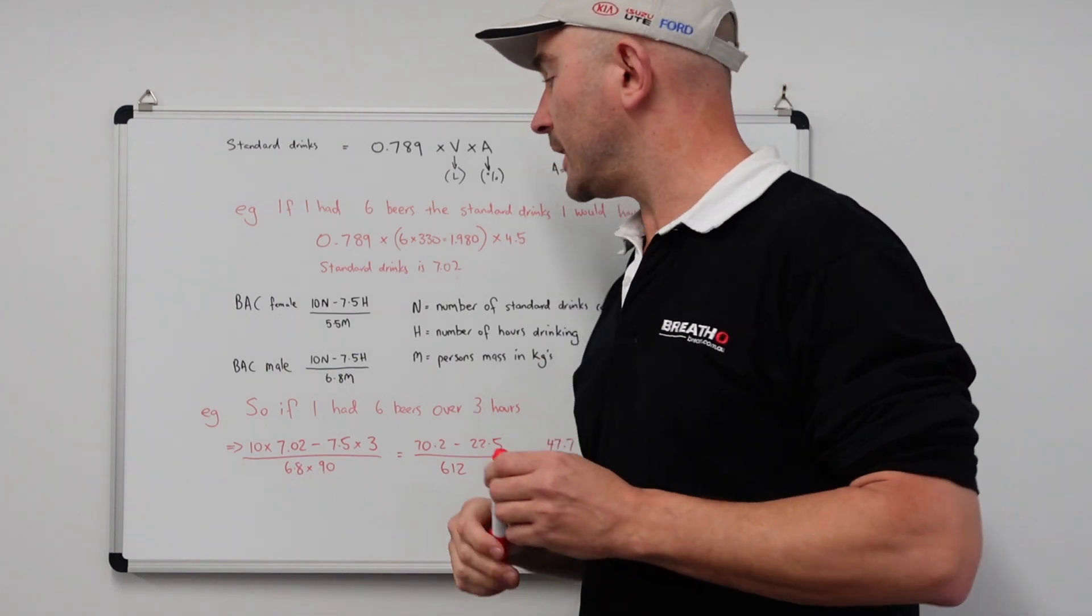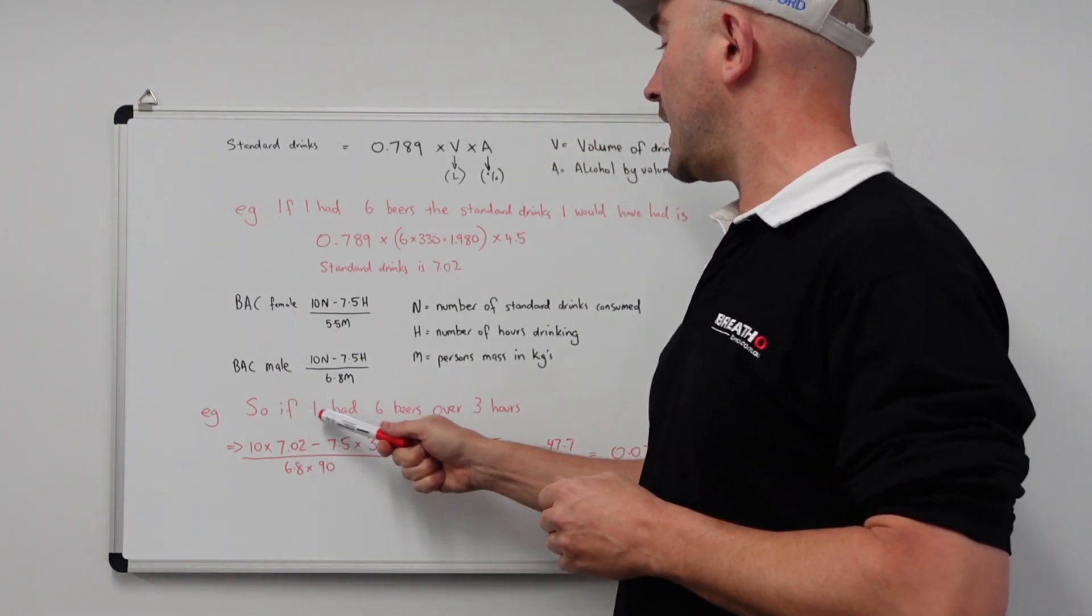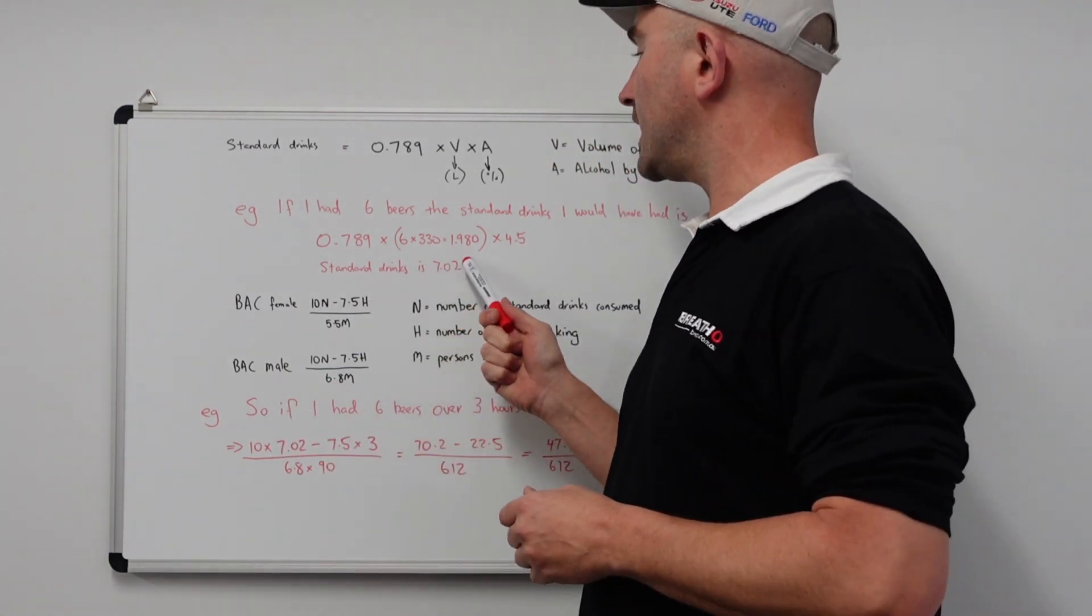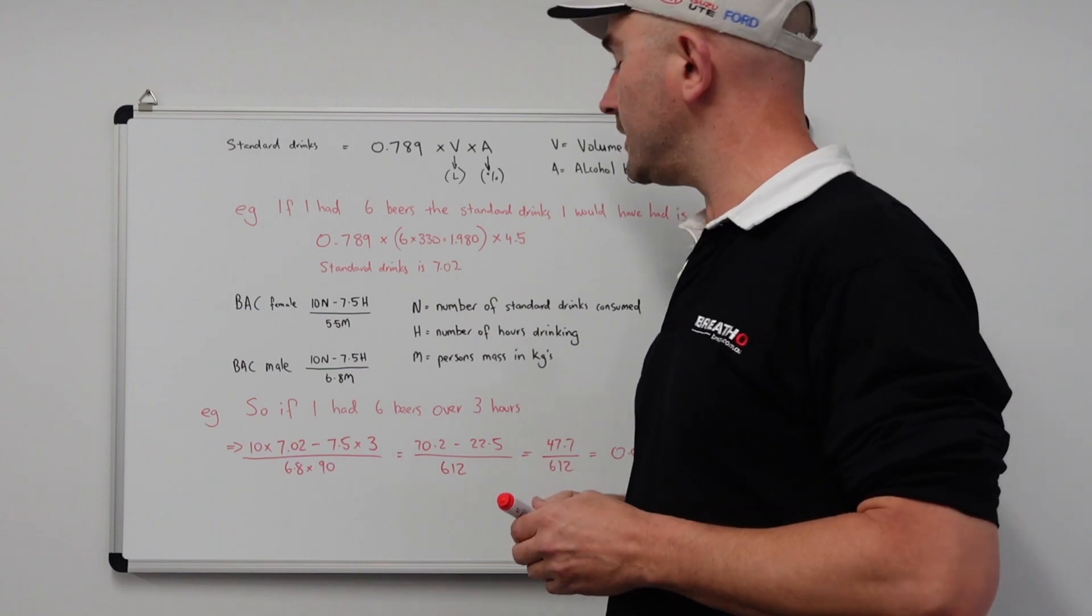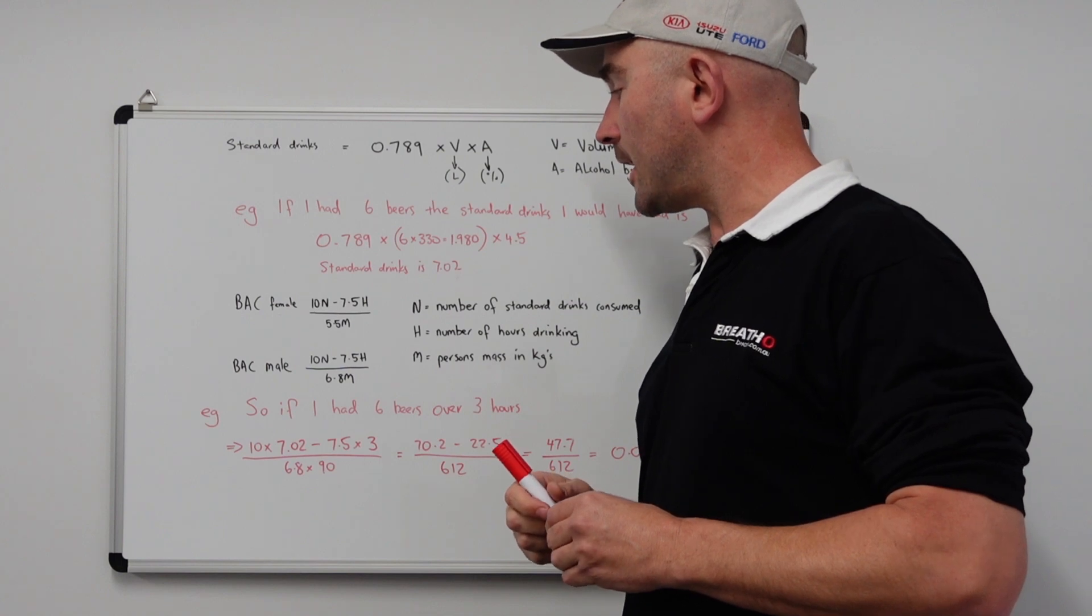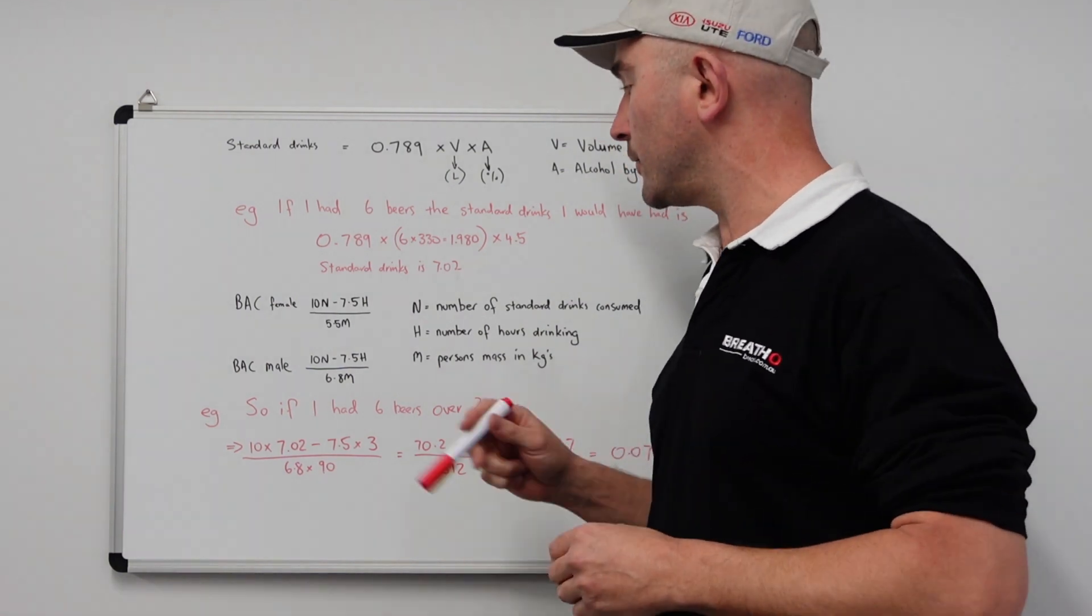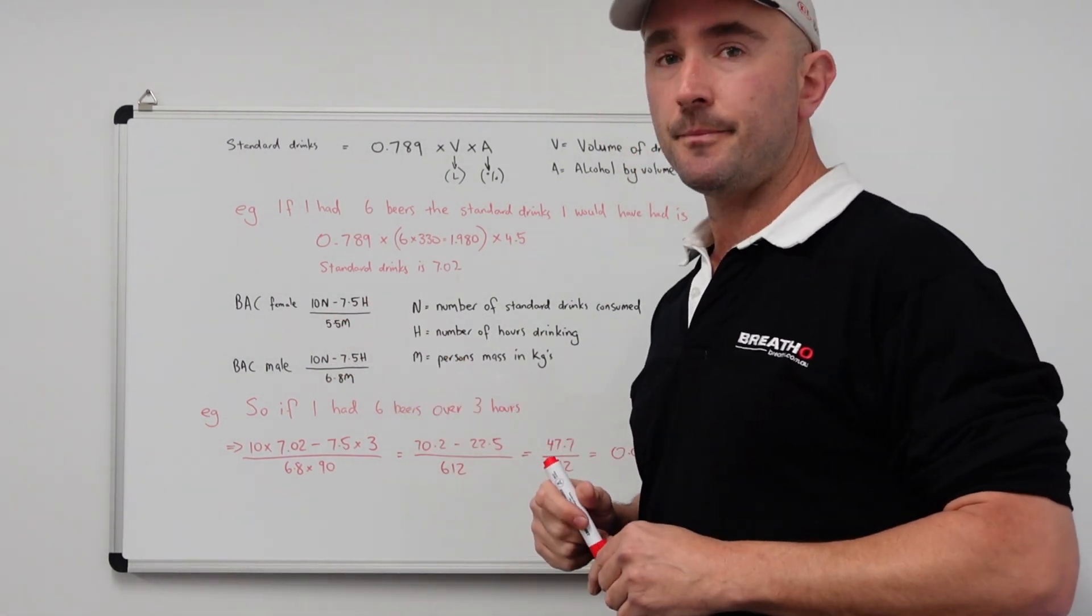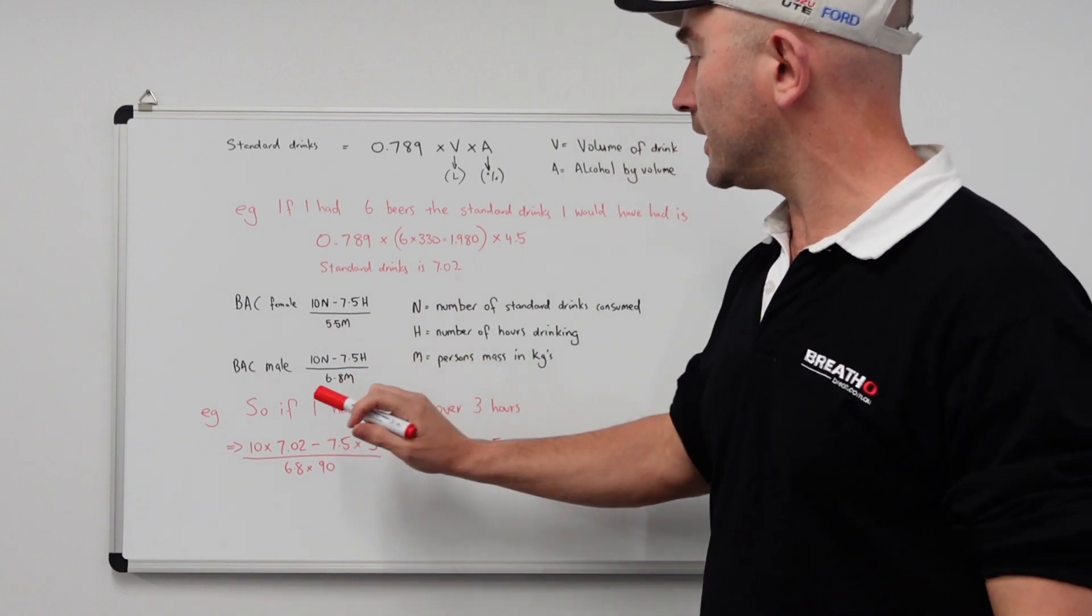Now let's do an example here. Say if I went and had six beers, which worked out the standard drinks total here, over three hours we can work out the estimate blood alcohol content through these two formulas here. So let's do an example.